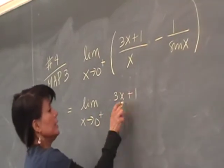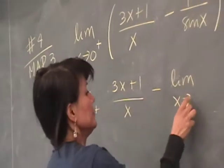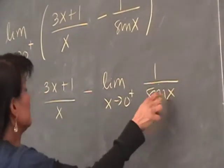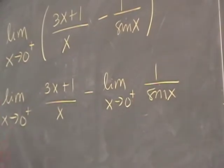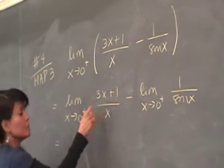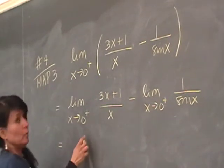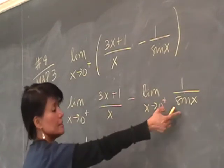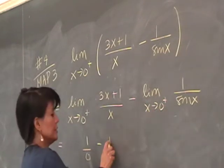So 3x plus 1 over x minus limit as x approaches 0 from the right of 1 over sine x. So as x approaches 0 from the right, this will become what? 3 times 0 plus 1 is 1, over 0, minus the other one is the same, 1 over 0.